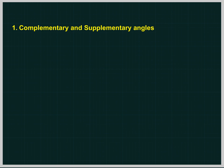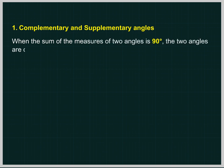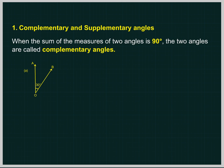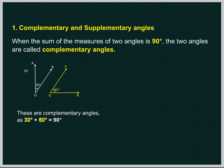Complementary and Supplementary Angles. When the sum of the measures of two angles is 90 degree, the two angles are called complementary angles. Angle AOB equals 30 degree and Angle PQR equals 60 degree. These are complementary angles as 30 degree plus 60 degree equals 90 degree.